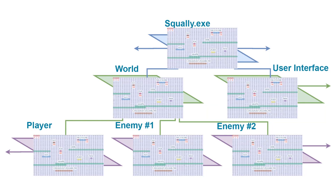It's important to note that all of these objects are just data, with the exception of the EXE which also has code — which we'll cover later. For example, the player inside here might have the player's X position, Y position, health, and mana. The enemy would have the same, but for the enemy obviously, and so on.